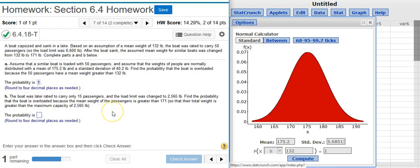Now, part B says, The boat was later rated to carry only 15 passengers. And the load limit was changed to 2,565 pounds. Find the probability that the boat is overloaded because the mean weight of the passengers is greater than 171. So, that their total weight is greater than the maximum capacity of 2,565 pounds.